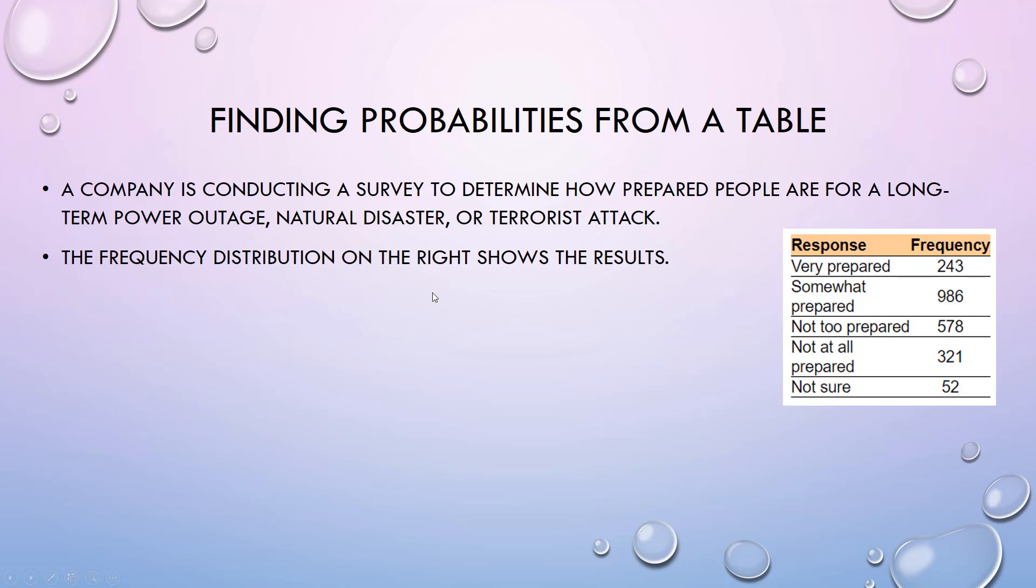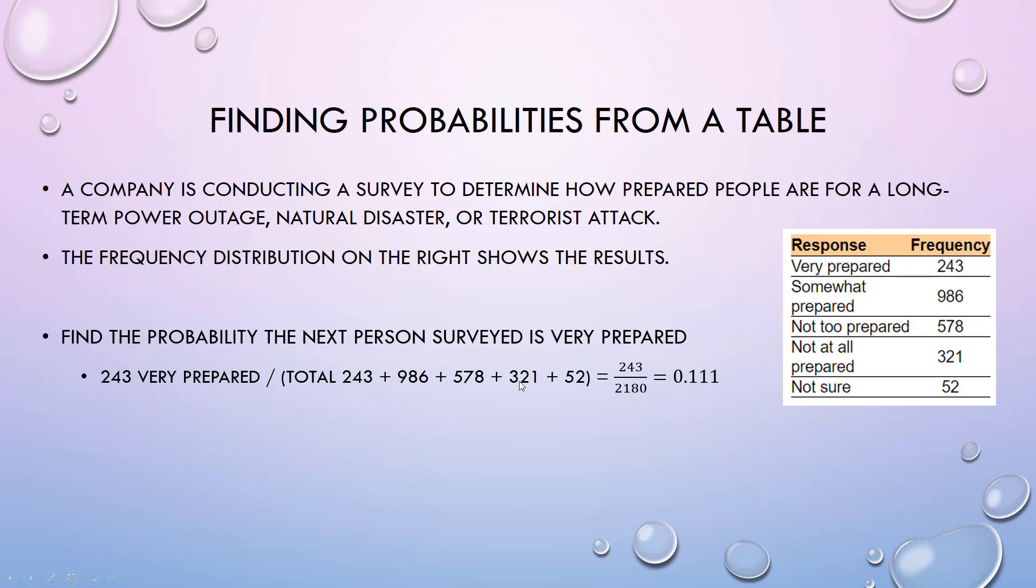Here we're given a frequency distribution with counts on how prepared people are for long-term power outage, natural disaster, or terrorist attack. We want to find the probability the next person surveyed is very prepared. The probability is the total number that say they are very prepared divided by everybody, the sample size. So 243 divided by the total sample size, and we get our probability.